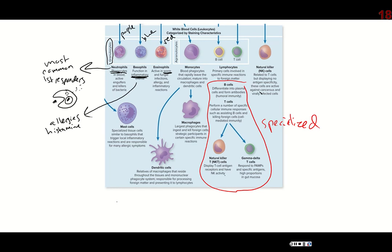Mast cells do a similar thing — they're also part of the inflammatory response, very similar to basophils. But basophils are pretty rare in the blood, much lower than neutrophils. Mast cells are larger than basophils, and they tend to hang out in the mucous membranes, while basophils can actually circulate.